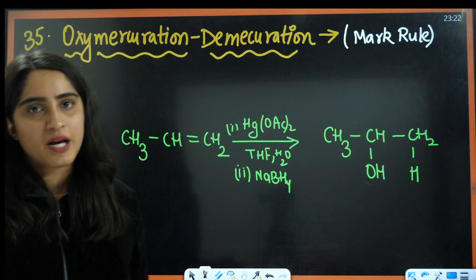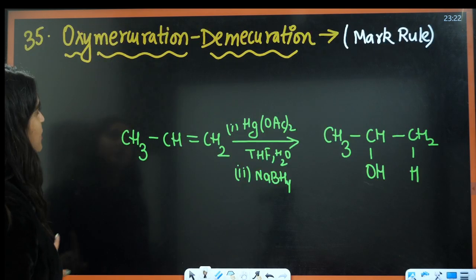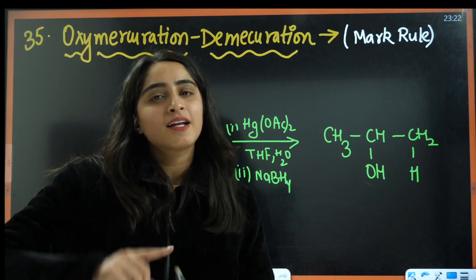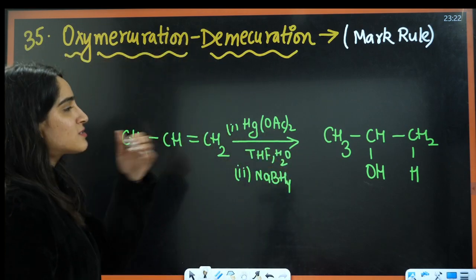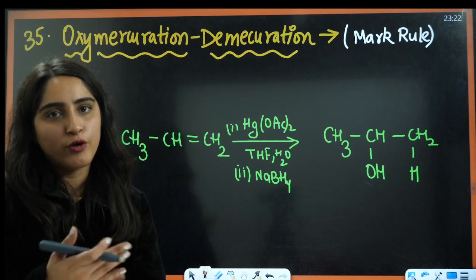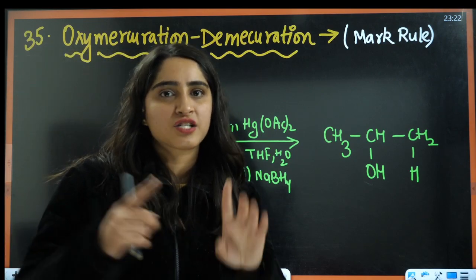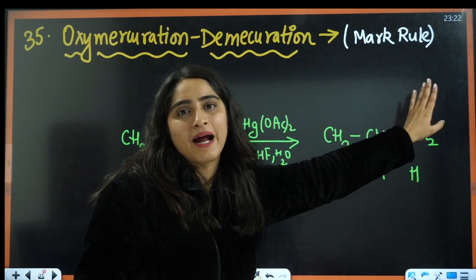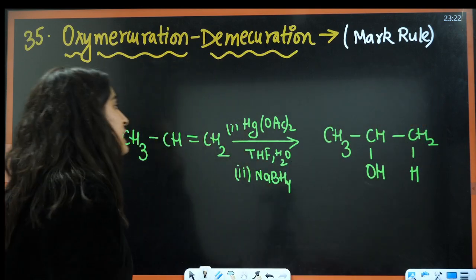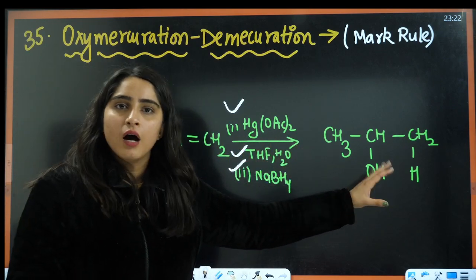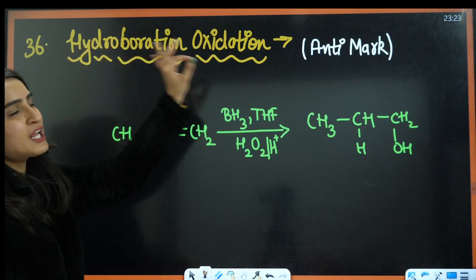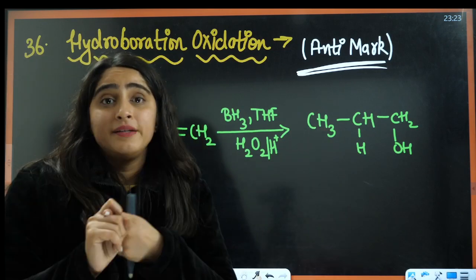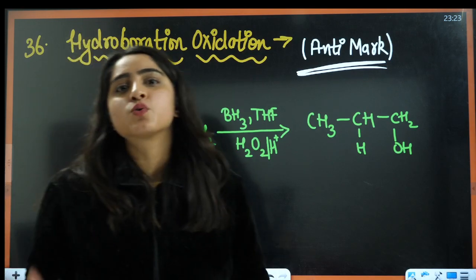Next is oxymercuration-demercuration and hydroboration oxidation. When forming alcohol from alkene: in acid-catalyzed hydration, carbocation rearrangement occurs. In oxymercuration-demercuration, no rearrangement — Markovnikov's rule is simply applied. In hydroboration oxidation, anti-Markovnikov rule applies — the OH goes to the carbon with more hydrogens.